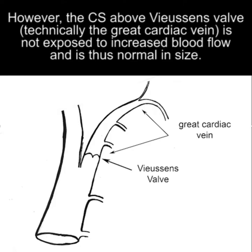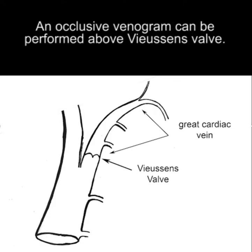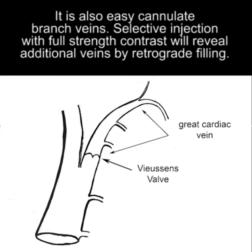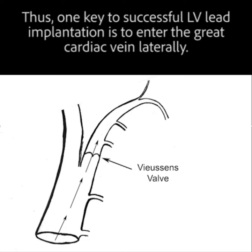However, the CS above Vucin's valve, which is technically referred to as the great cardiac vein, is not exposed to increased blood flow and is thus normal in size. An occlusive venogram can be performed above Vucin's valve, and it is also easy to cannulate branch veins above Vucin's valve. Selective injection with full-strength contrast will reveal additional veins by retrograde filling. Thus, one key to successful LV lead implantation is to enter the great vein laterally.